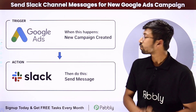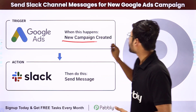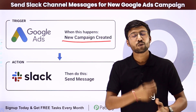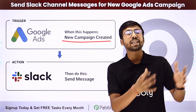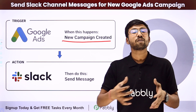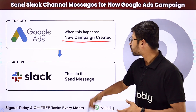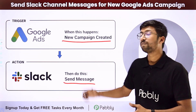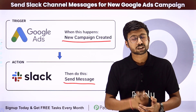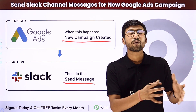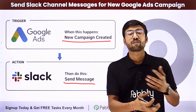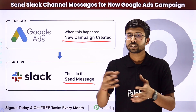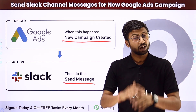Using this automation, whenever we create a new campaign in our Google Ads account, automatically the details of that newly created campaign will be shared as a message on our Slack channel with our team members. In this way, you don't have to manually create a campaign and then share those campaign details with your team members on Slack.